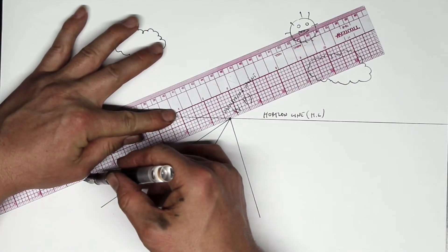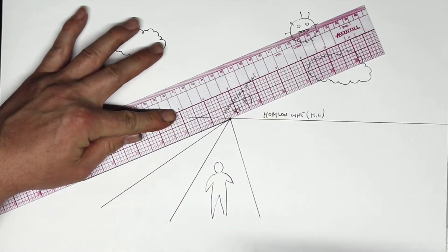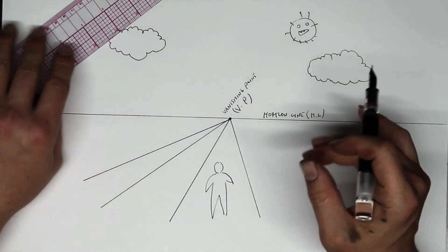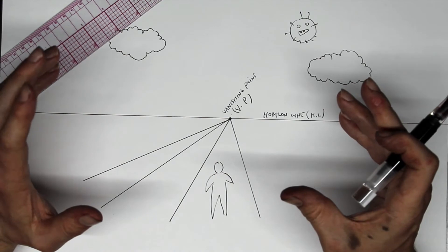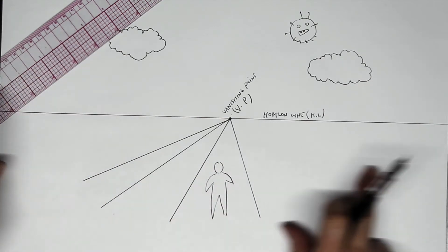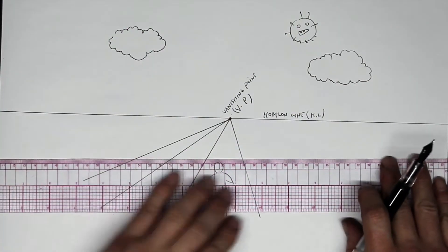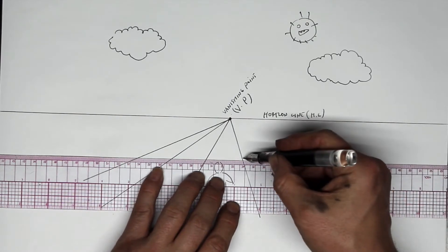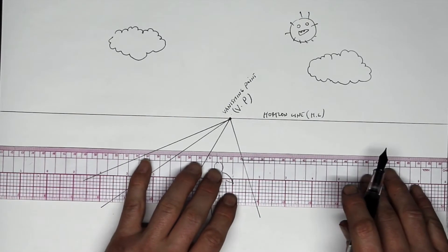In one point perspective we have three kinds of lines. If we have some kind of intersection in the road up ahead, a second road, the lines on that road are going to be perfectly horizontal. So those are horizontal lines.